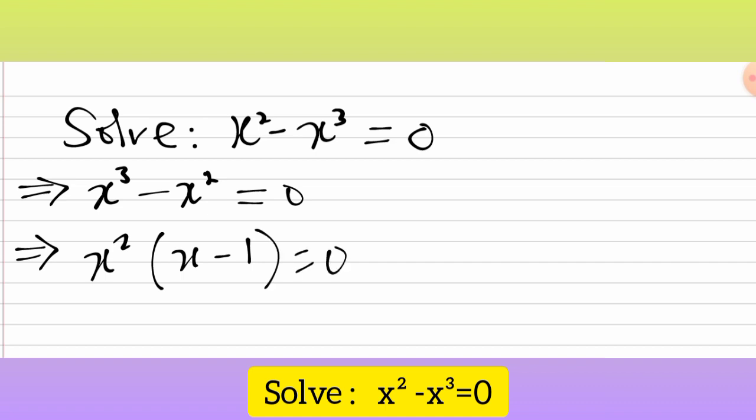From here, we can now have x² = 0, or we have x - 1 = 0.